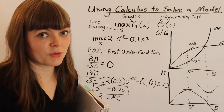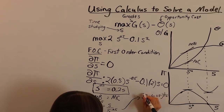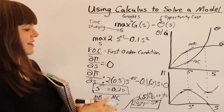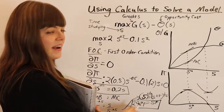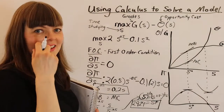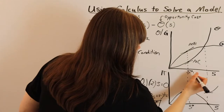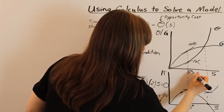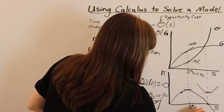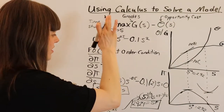Let me continue with the algebra. It turns out that studying 2.924, or roughly 3 hours a day, is the optimal amount of time to spend studying based on this equation. So the optimal s is equal to 2.92 - that's the optimal time spent studying according to this algebra.